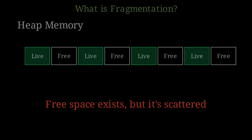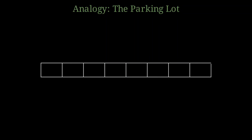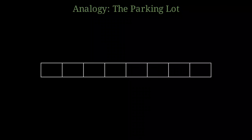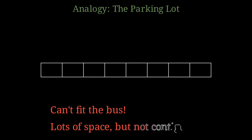Think of a parking lot. Every other space has a car in it — car, empty, car, empty, car, empty. The lot is half full. Now imagine you need to park a bus. The bus needs multiple consecutive spaces. Can you fit it? No. There's plenty of empty space in total, but none of the gaps are large enough. You need contiguous space, and you don't have it.